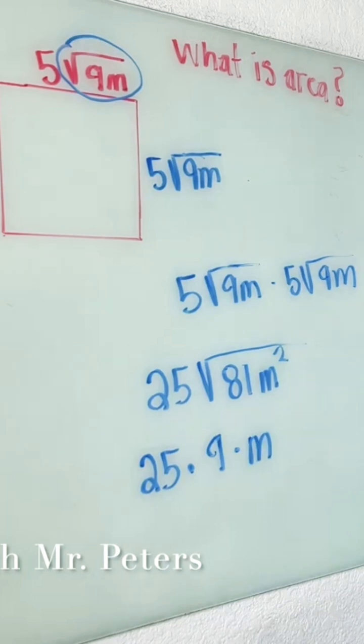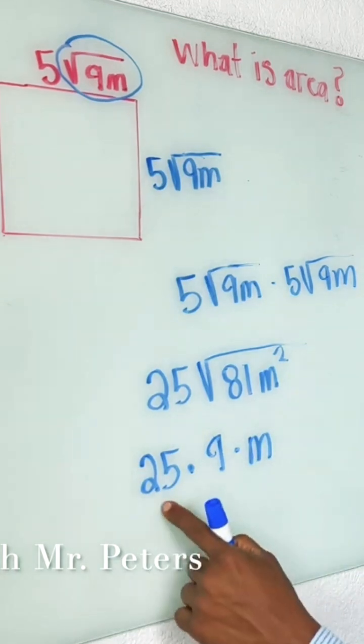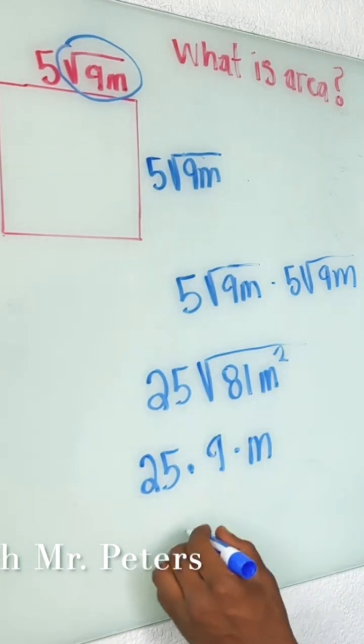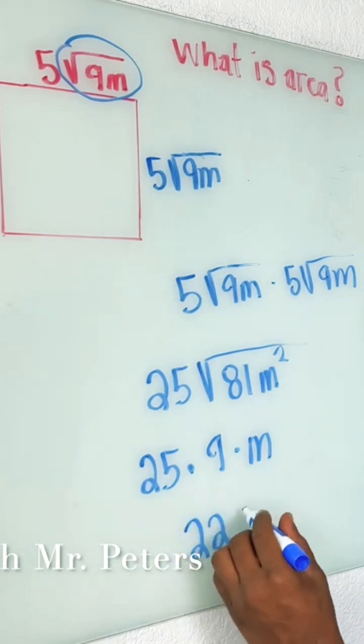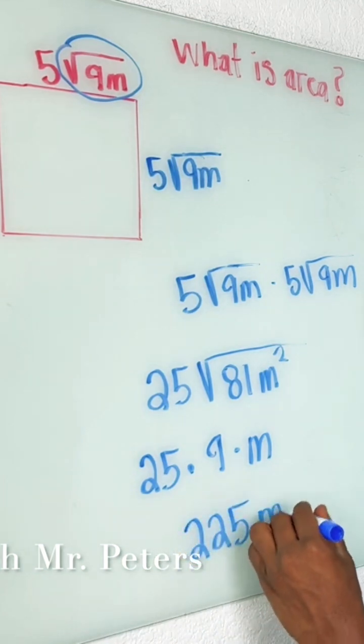So now when we break this back down, we're going to get 25 times 9, which will give us 225 meters squared.